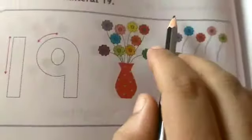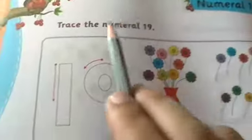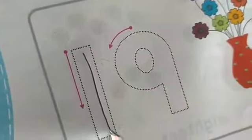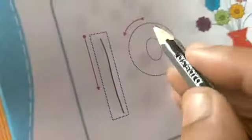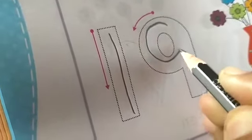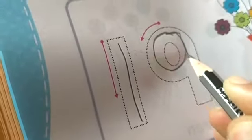Our next numeral is numeral 19. Trace the numeral 19. First, I will show you how to write numeral 19 — top to down straight, start from here, go around, and then top to down straight again. Like this.